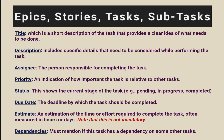Title: a short description of the task that provides a clear idea of what needs to be done. Description: includes specific details that need to be considered while performing the task. Assignee: the person responsible for completion of the task. Priority: indicates the urgency or importance of the task relative to other tasks. Status: shows the current stage of the task — for example, pending, in progress, to do, completed, etc.